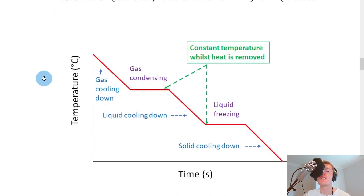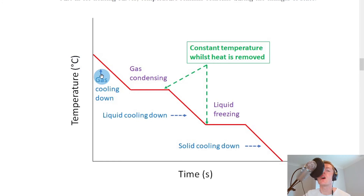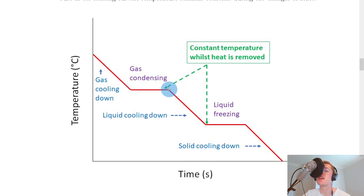Looking at the cooling curve graph, we've got temperature in degrees Celsius on the y-axis against time in seconds on the x-axis. Instead of a zigzag pattern going upward, we've got a stepped pattern going downward. Starting with a gas at a high temperature, if we remove heat from that gas and cool it down, its temperature will decrease over time until it reaches its condensation point. At this point the gas starts condensing, and it condenses over time whilst heat is still being removed, until all of the gas has been condensed into a liquid. We've got a constant temperature here whilst condensation occurs.